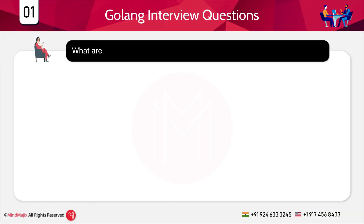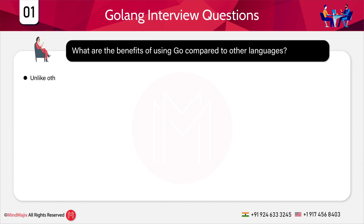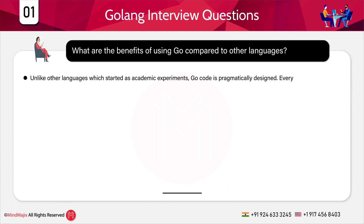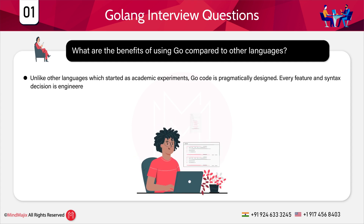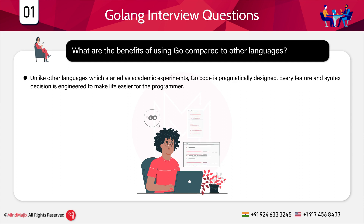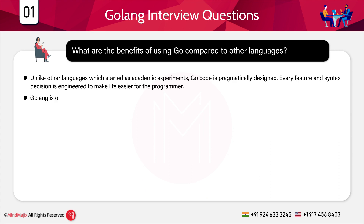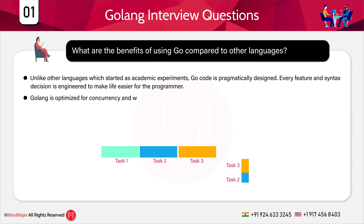The first question: what are the benefits of using Go compared to other languages? Unlike other languages which started as academic experiments, Go's code is programmatically designed — every feature and syntax decision is engineered to make life easier for the programmer. Languages like C, C++, and Java were broadly used earlier, often for academic purposes, but Go is more user-friendly for programmers. Golang is also optimized for concurrency and works well at scale.